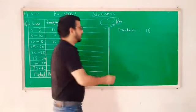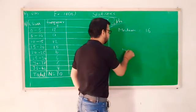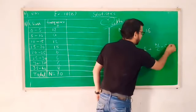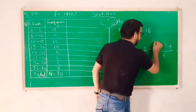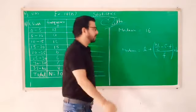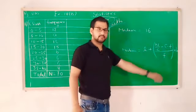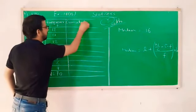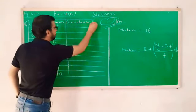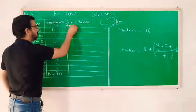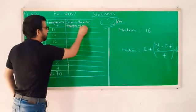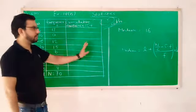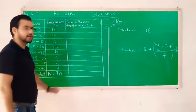Now you know it very well that the median formula is lower limit plus n upon 2 minus cf upon f into h. It means we need cumulative frequency in this. So first, we will find cumulative frequency. Cumulative frequency, or we write cf in shortcut. And the cf column is made slightly bigger for calculation purposes.